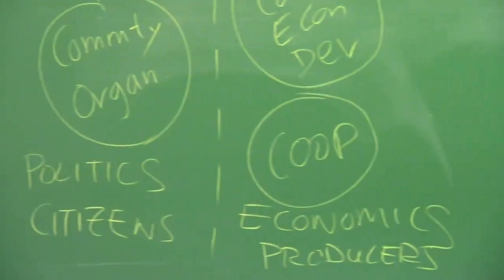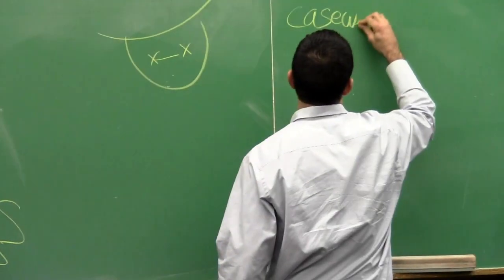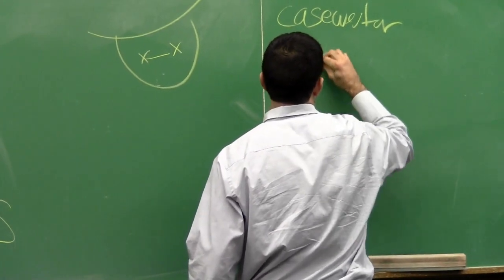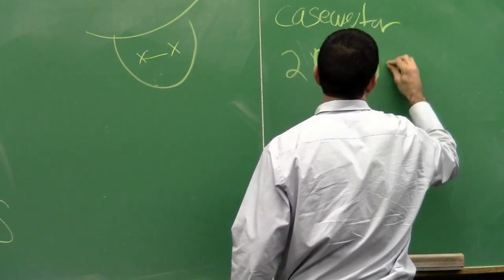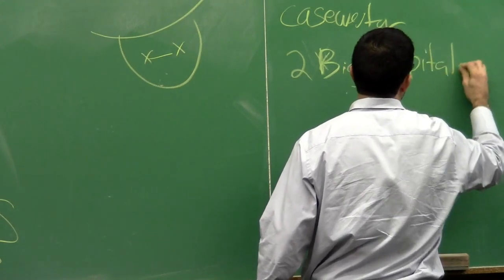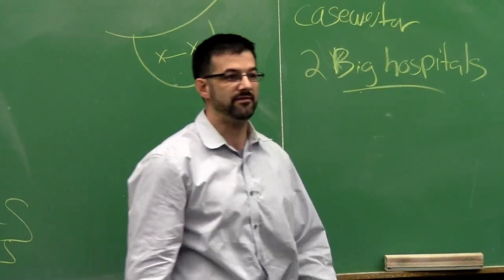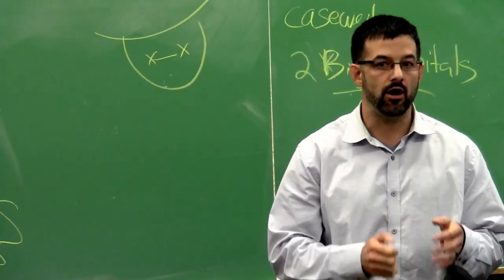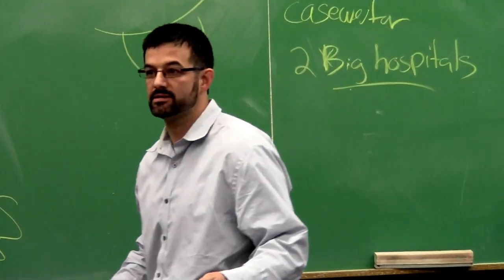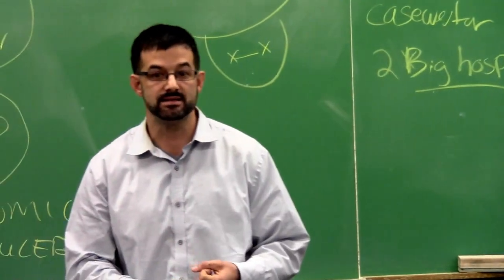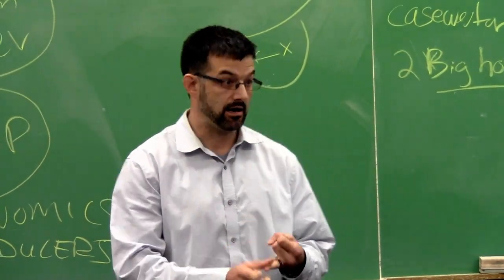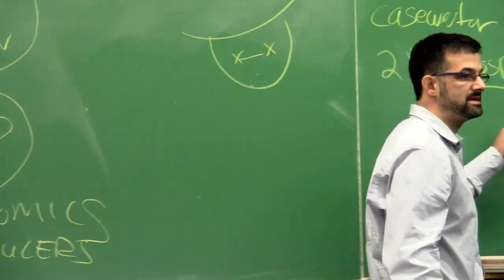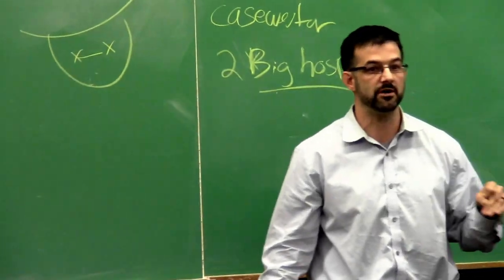So then they did something further. We have Case Western, two big hospitals. They come back to Cleveland and think, okay, we're interested in this model for cooperative development. How can we proceed? Let's do an audit. Let's do an audit of our ongoing institutional demands for goods and services. In this case, power, ecological laundry, and food. Hospitals are enormous consumers of all three of those things.